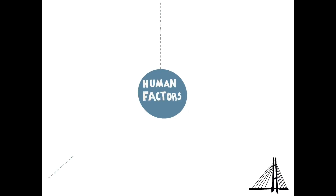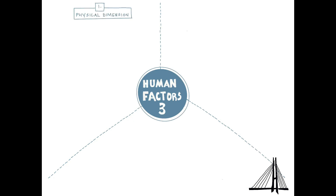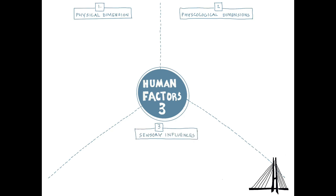There are three important factors which you need to consider while designing any space. Those factors are physical dimensions, which we term as ergonomics, psychological dimensions, and sensory influence. These three factors will not only influence our design but also how, as a human, we react to any space.